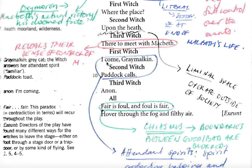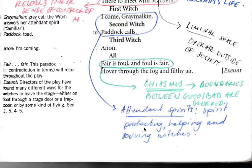The first witch says, 'I come, Grey Malkin,' and the second witch says, 'Paddock calls.' Grey Malkin is a cat and Paddock is a kind of toad or frog. These are called attendant spirits — as you see witches with cats quite frequently in normal representations. They are spirits helping and serving the witches, and there's this suggestion of these attendant spirits calling the witches away.